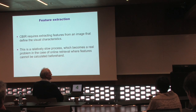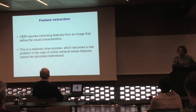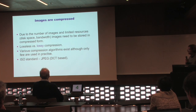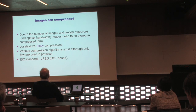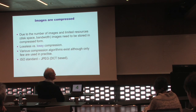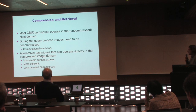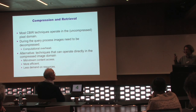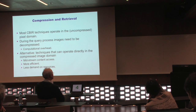Feature extraction can be computationally quite expensive, so performing it online will take quite some time. At the same time, images are typically compressed to save disk space and bandwidth. They are usually compressed using lossy compression techniques, with JPEG being the most common — most images on the web are stored in JPEG format. CBR techniques mostly operate in the pixel domain on uncompressed data, so feature extraction requires first decompressing images, adding computational overhead. Storing features also counters the savings from compression.